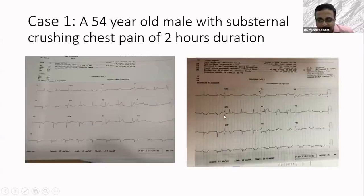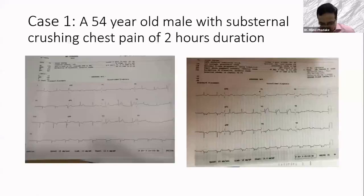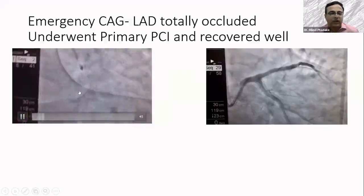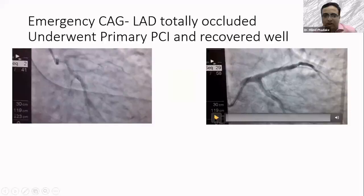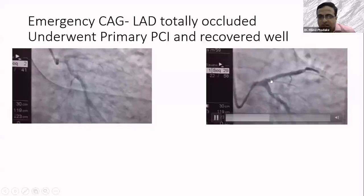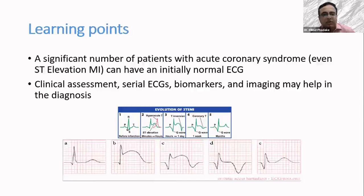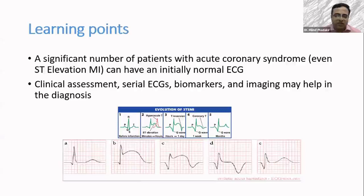This patient was taken up for primary angioplasty. His angiography revealed total occlusion of the LAD — completely cut off. After recanalization and stenting, LAD flow was completely restored. I started with this simple ECG to emphasize that patients with ACS, even STEMI patients, can initially have a normal ECG. You must look at these patients clinically and consider serial ECGs, biomarkers, and if required, imaging. We know the typical evolution of ECG in a STEMI — initially normal, then hyperacute T waves and typical ST elevations.